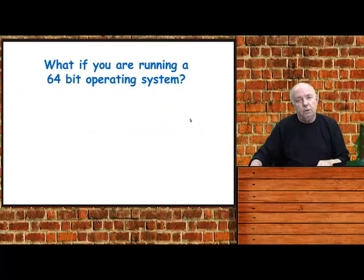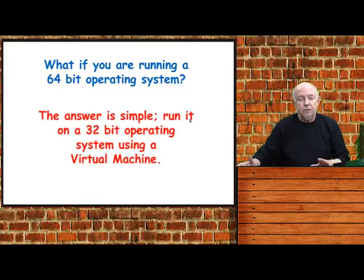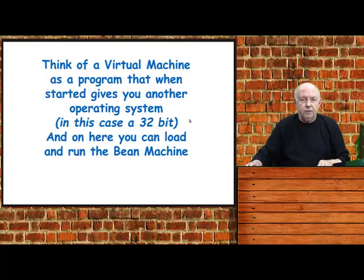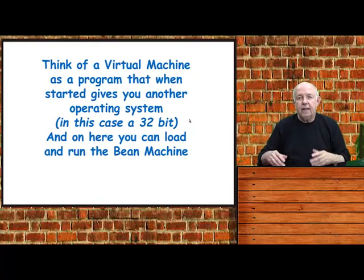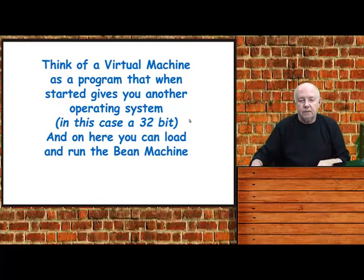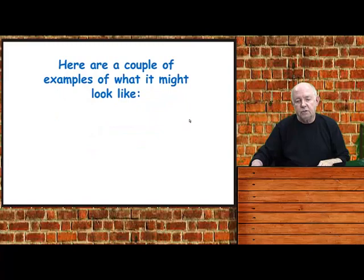What do you do if you're running a 64-bit operating system? The answer is simple: just run it on a 32-bit operating system using what's called a virtual machine. You can think of a virtual machine as just a program that loads in a 32-bit operating system, and then it is able to run your program in that 32-bit operating system — so you really have two operating systems going. Here's a couple examples of what it might look like.